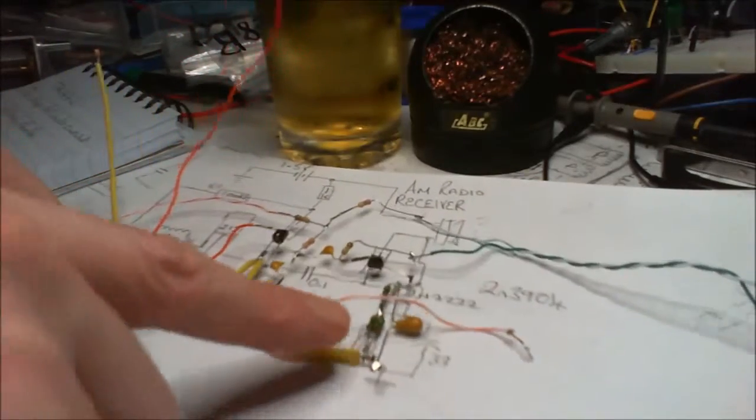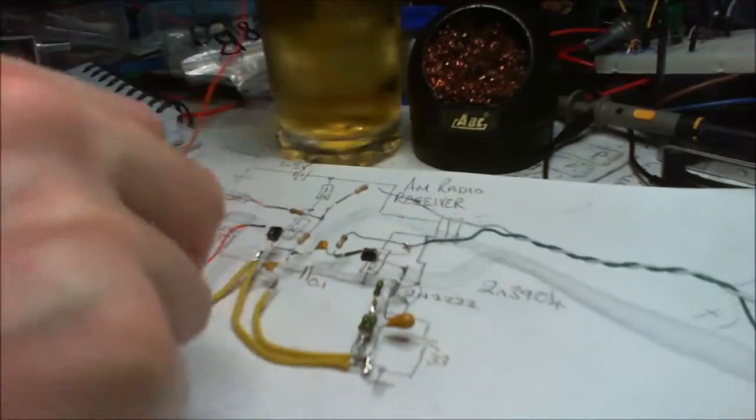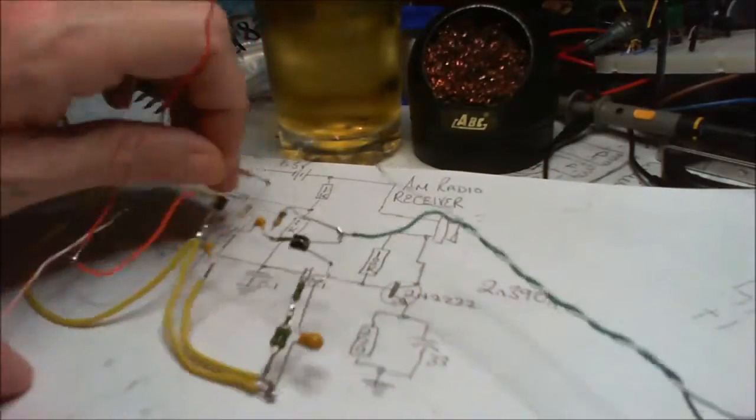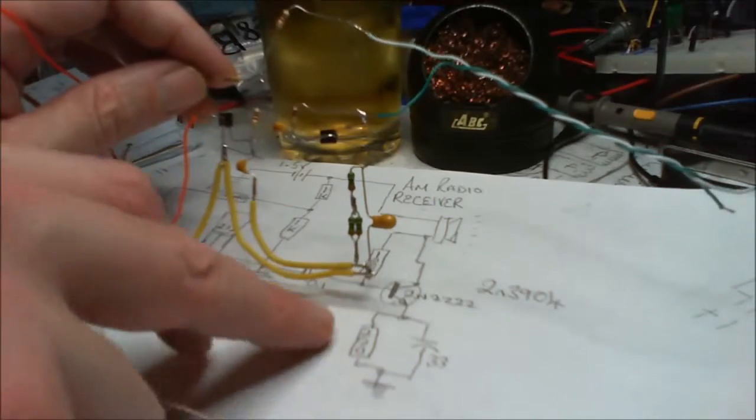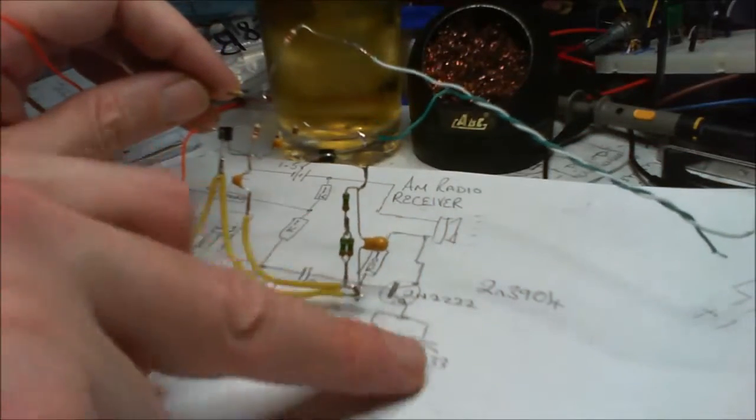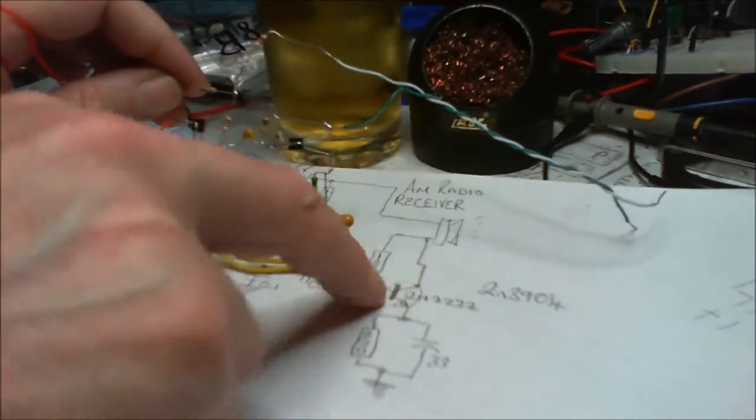Well, as you can see there, look, here's this little, get that out of the way, that's to go on the capacitor. So there's the 220 ohm, there's the 33 mic, this is the transistor.